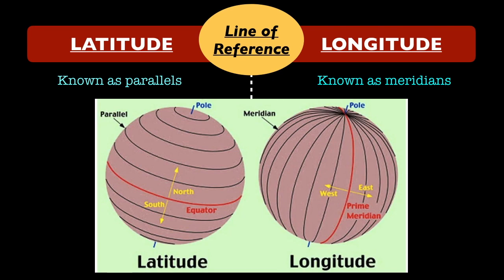The next point is line of reference. The parallel circles from equator to north or south poles are termed as parallels of latitude, and the lines of reference running from the two poles, that is north to south, are meridians of longitudes.